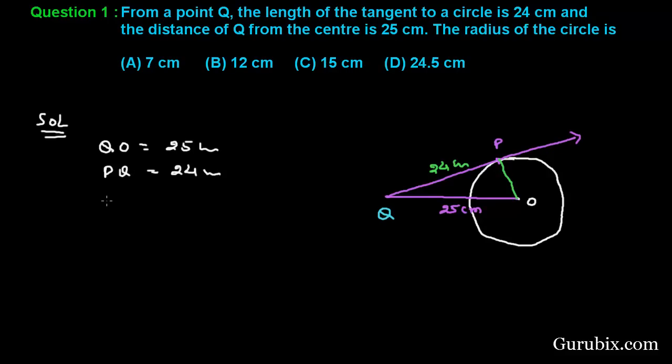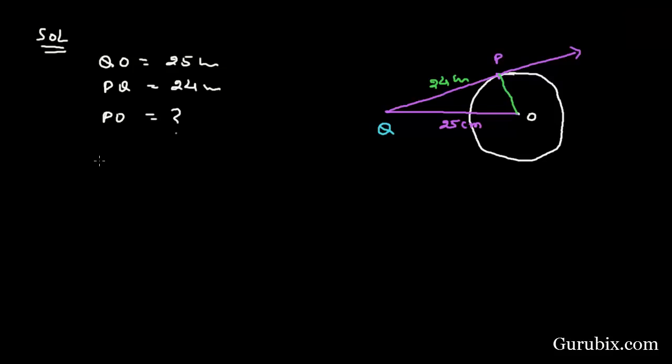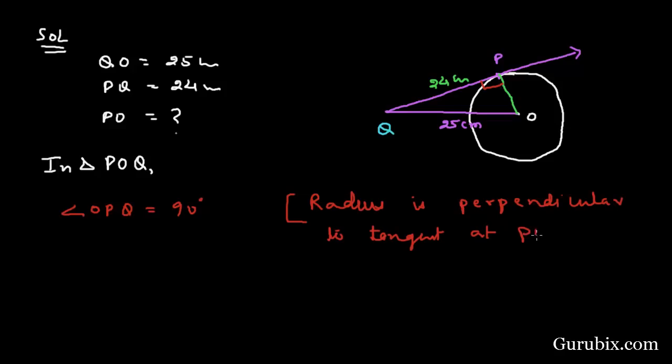We have to find out PO. So now we shall consider triangle POQ. In triangle POQ, angle OPQ equals 90 degrees, because the radius is perpendicular to the tangent at the point of contact. This is the reason.